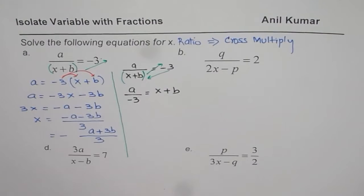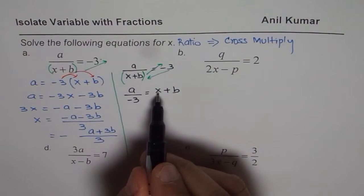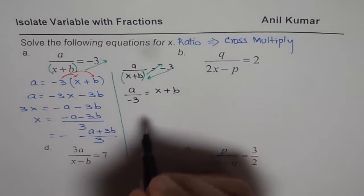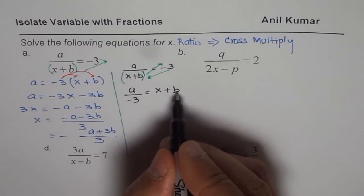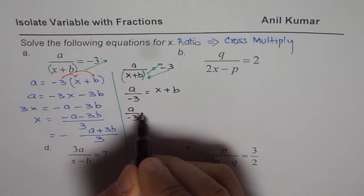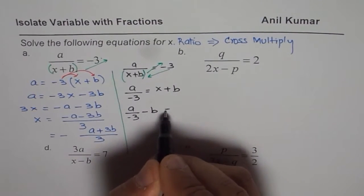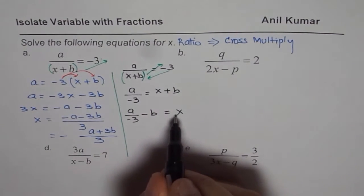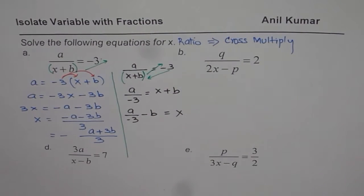That is my first step. Now I can isolate for x. So I can write x as equal to, I will bring b to this side. So I have a over minus 3, and this is minus b equals x. So I have isolated x. So that is another way of isolating x.